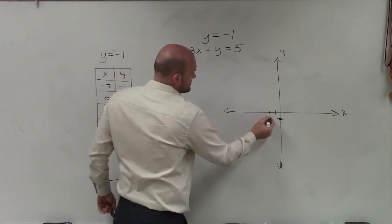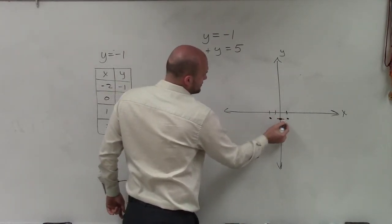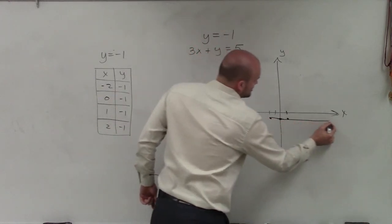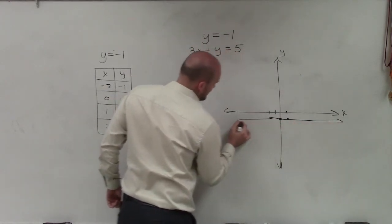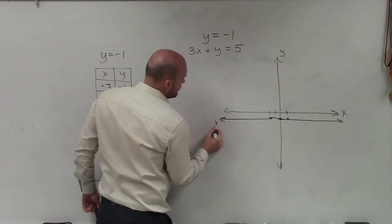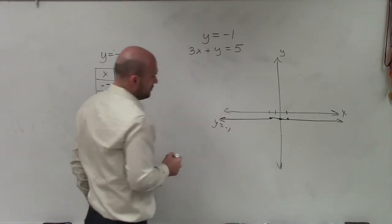Doesn't matter if it's negative 2, y equals negative 1. If it's positive 1, y equals negative 1. Therefore, our set of points that's going to create a line is going to be a horizontal line where y equals negative 1.